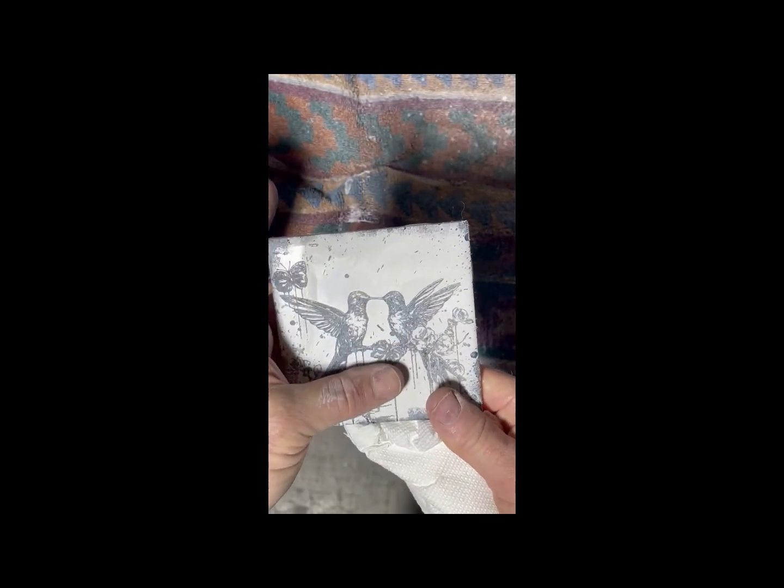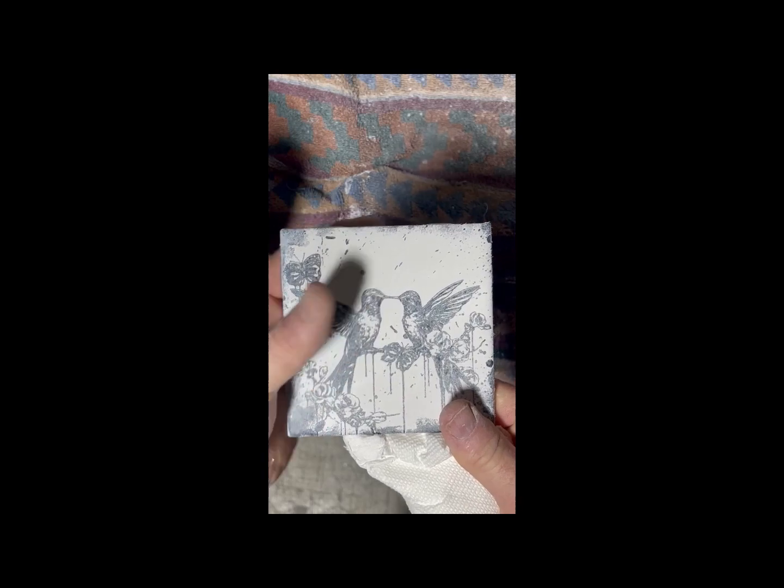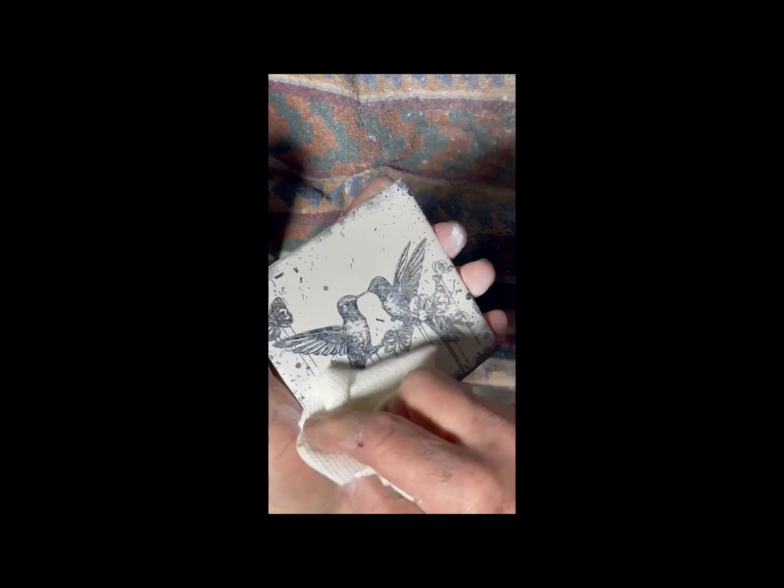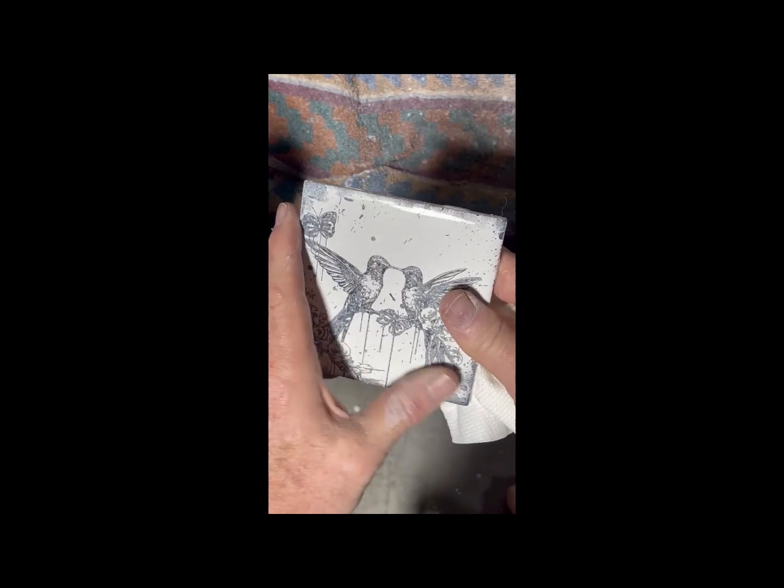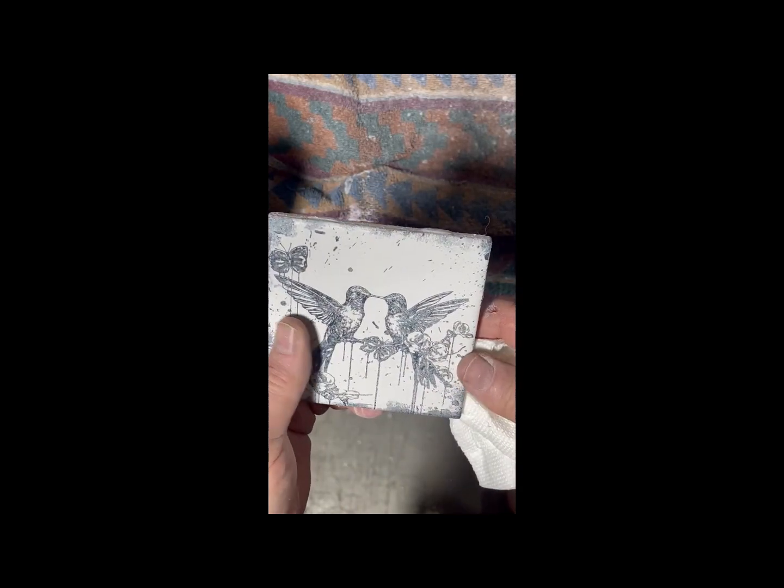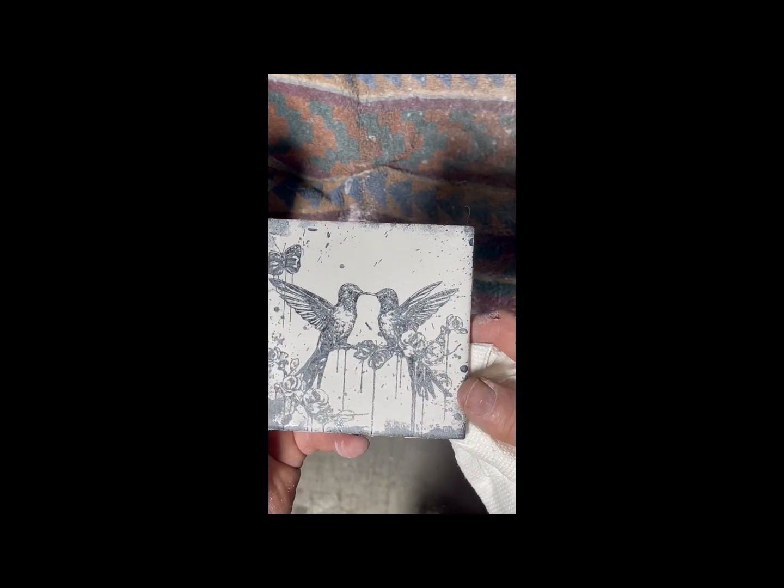Now the tile has an abrasive feel to it, and that's because of the titanium dioxide etched into the material, into the tile. But we'll let this dry for a moment and then the next step is to put a coat of clear on top of it.